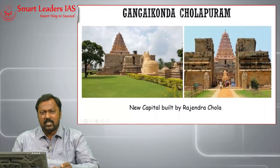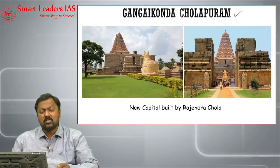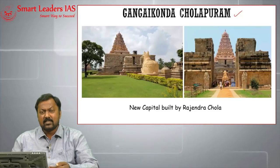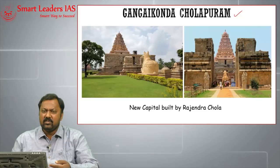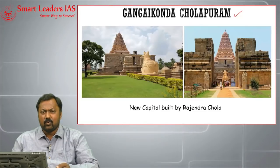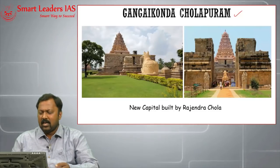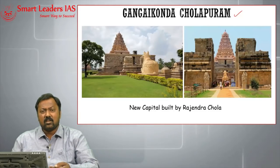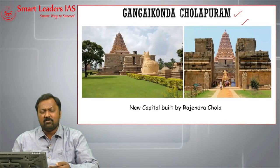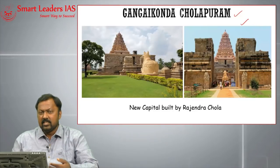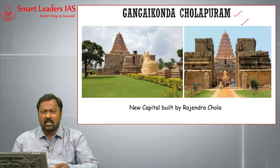Gangaikonda Cholapuram is also a capital city, built by Rajendra Chola — the son of Raja Raja Chola. He defeated the Ganga rulers and established this new city called Gangaikonda Cholapuram. It also has a temple called Brihadeeswarar, known for its beauty and as a classical example of the Dravidian style of architecture.